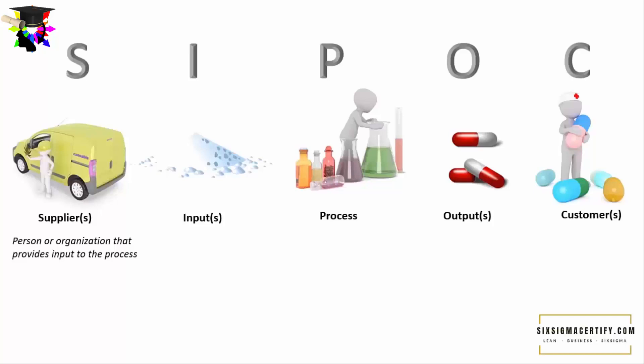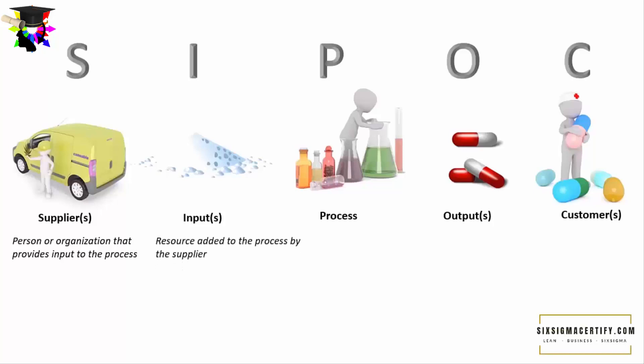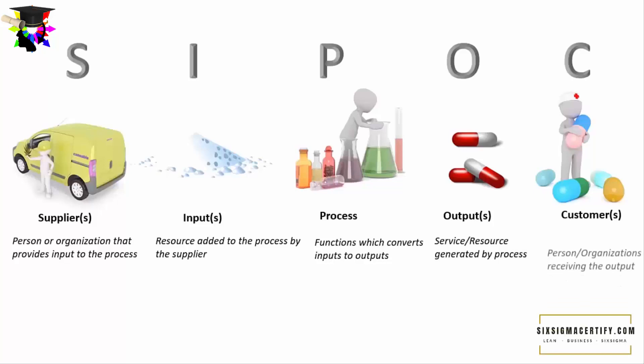Suppliers are the persons or organizations that provide input to the processes. There may be many suppliers for a certain product or service. Inputs are the resources added to the process by the suppliers — these are the resources which go into the processes in order to form the output. Processes are the functions which convert the inputs to the outputs. Outputs are the services or resources generated by the processes, and customers are the persons or organizations receiving the output.